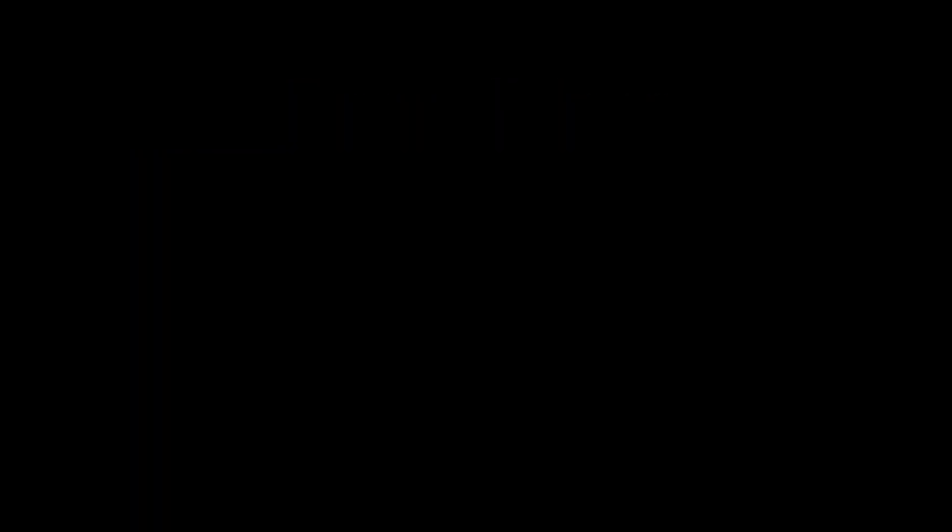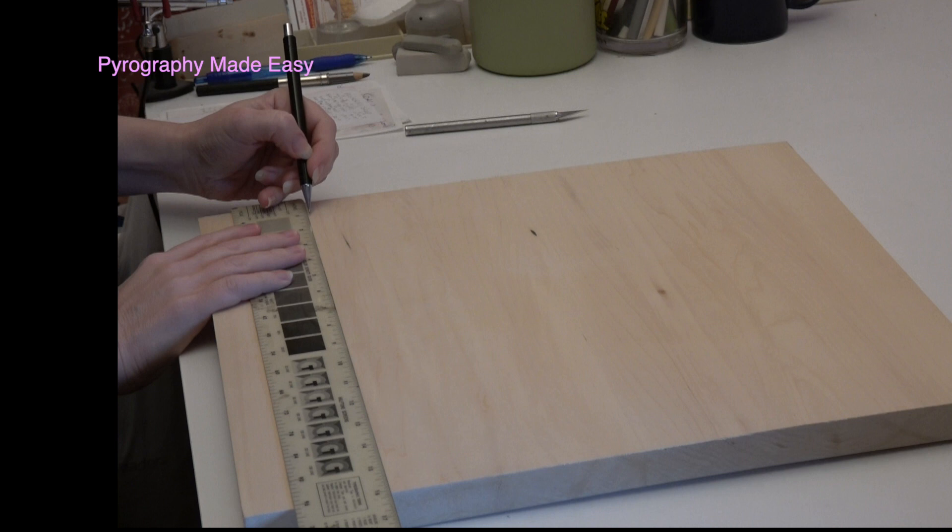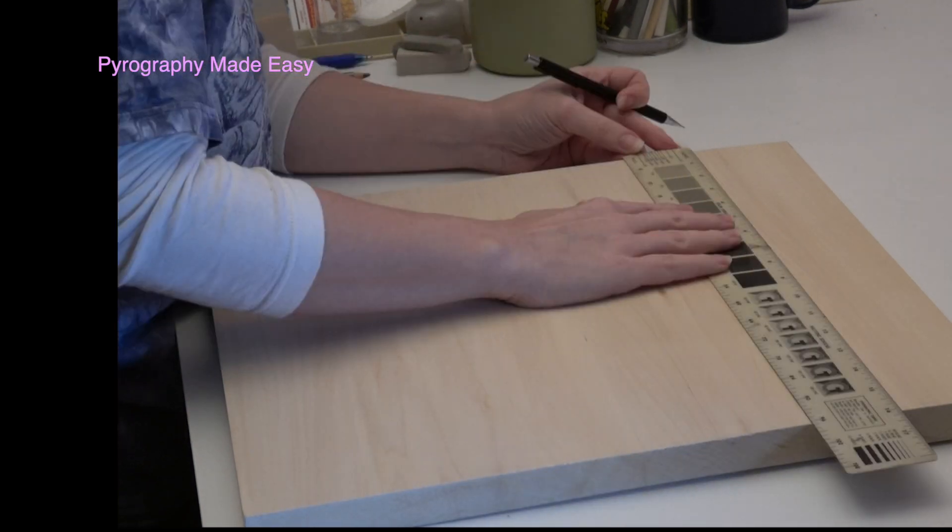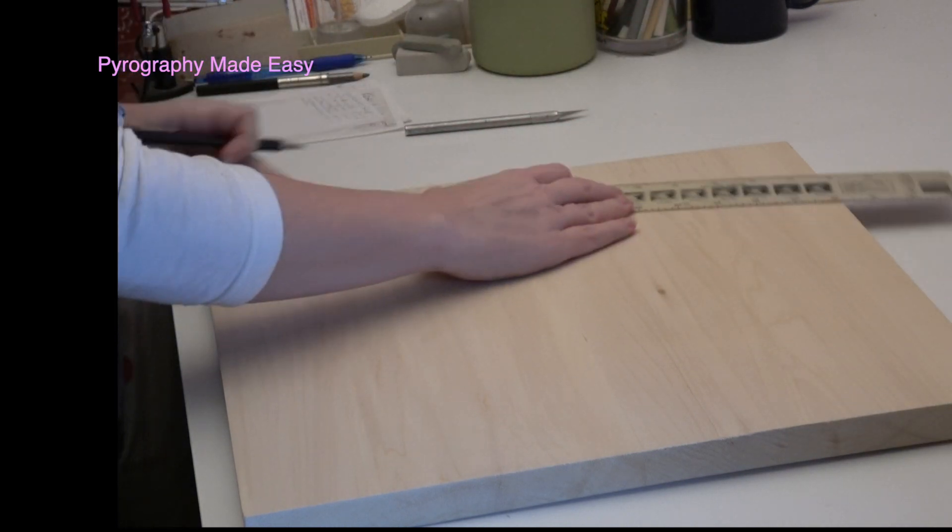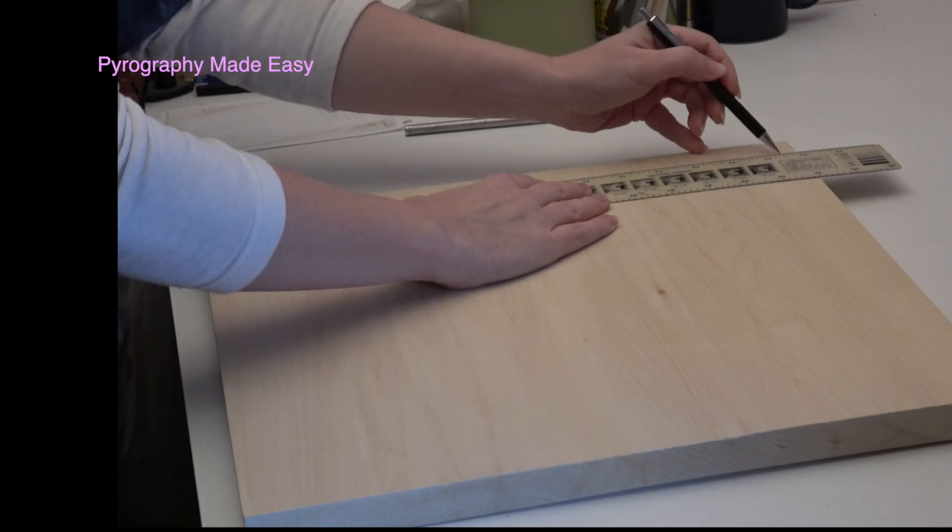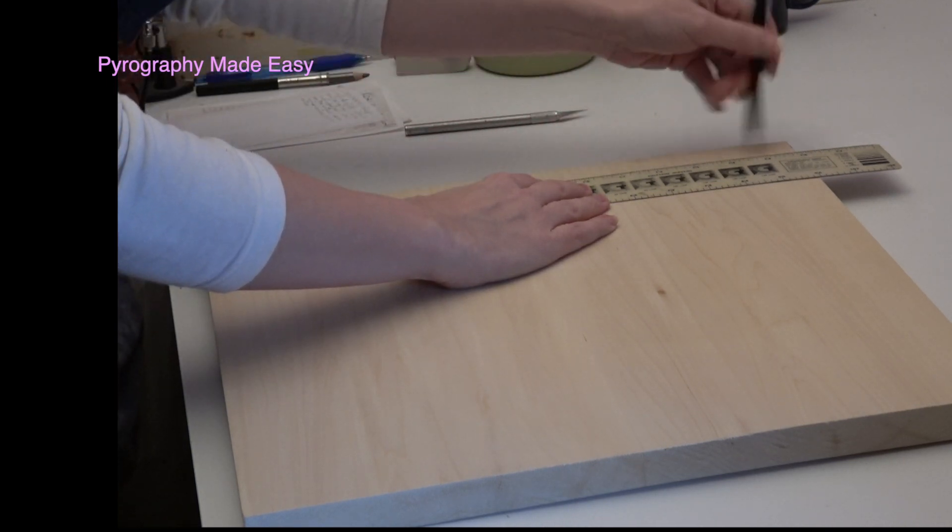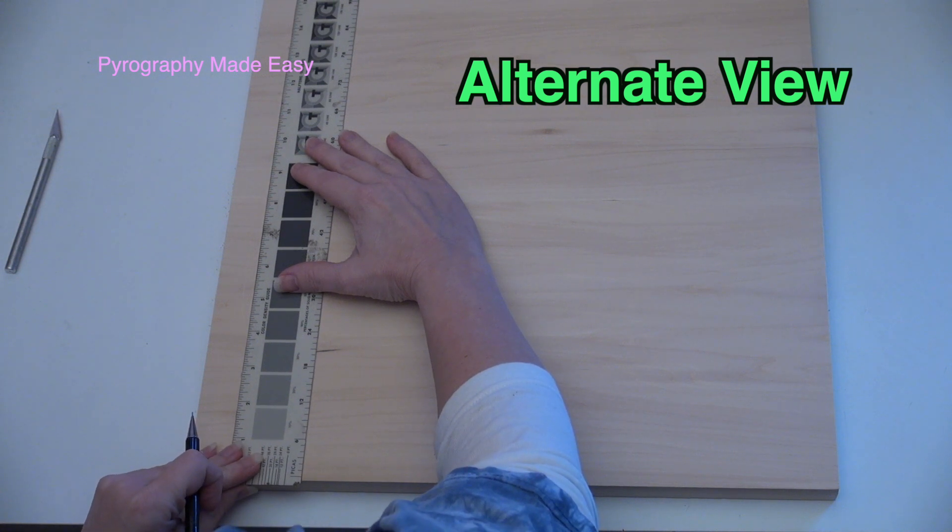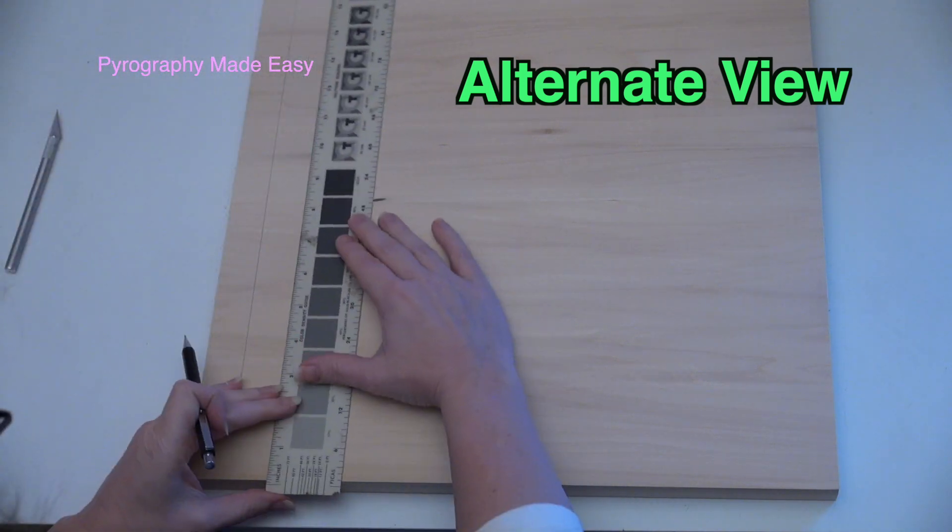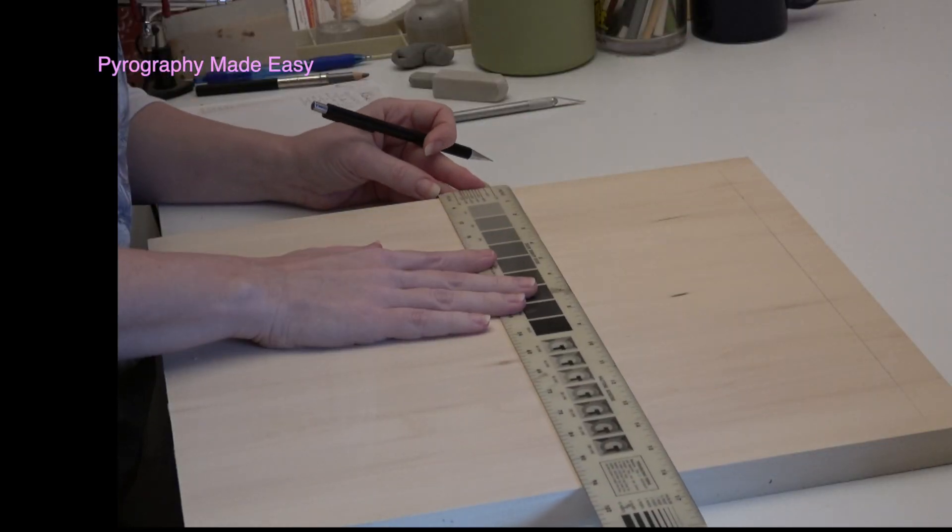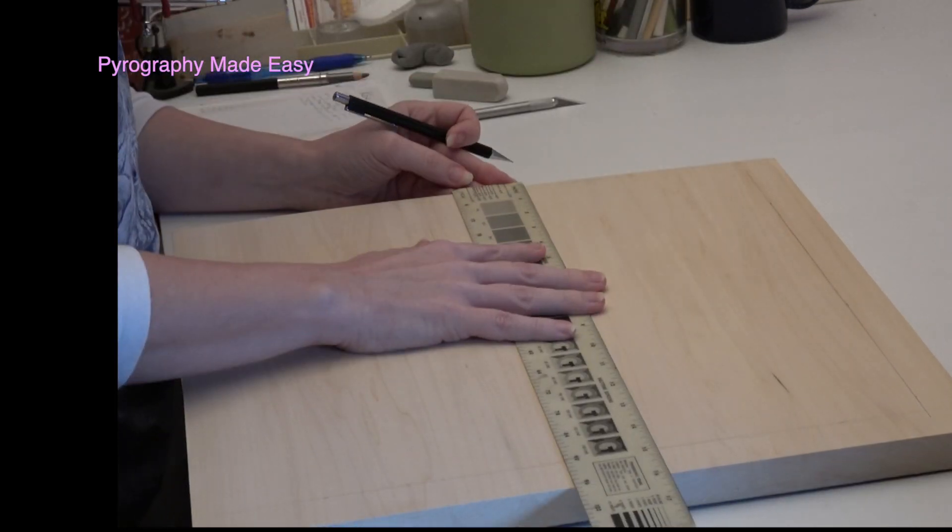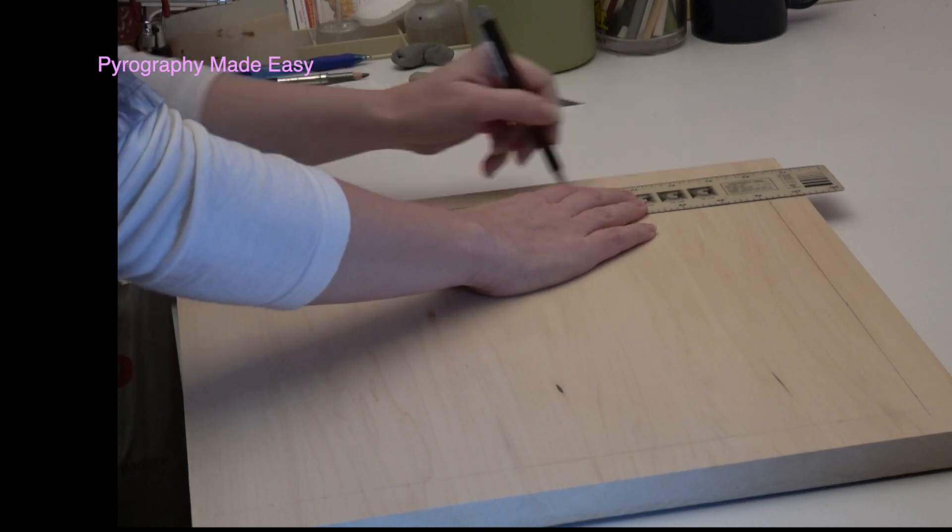Begin by using a ruler to measure and mark the inner edge of the frame. It is completely up to you how wide you want your frame to be. Then use a straight edge and draw a line connecting the marks. I run the pencil over the line a couple of times to make sure I can easily see it. Then rotate the board and repeat the steps on the next side. Continue this process until the inner frame is complete.